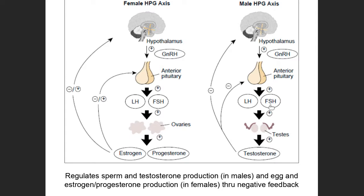The anterior pituitary releases more luteinizing hormone and follicle stimulating hormone into the blood. In males, these travel to the testes — the male gonads — and have a positive feedback effect on the testes, causing them to produce more testosterone, which in turn increases production of sperm as a kind of side effect.